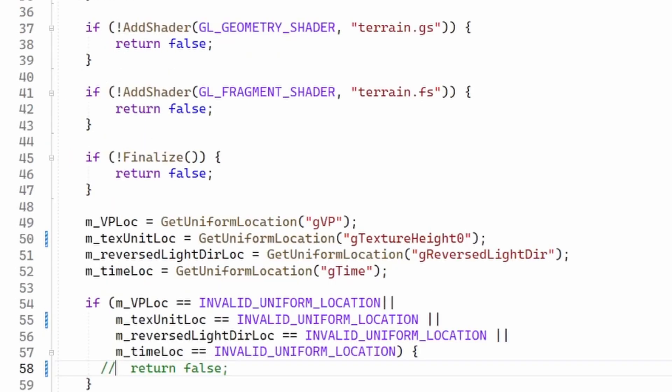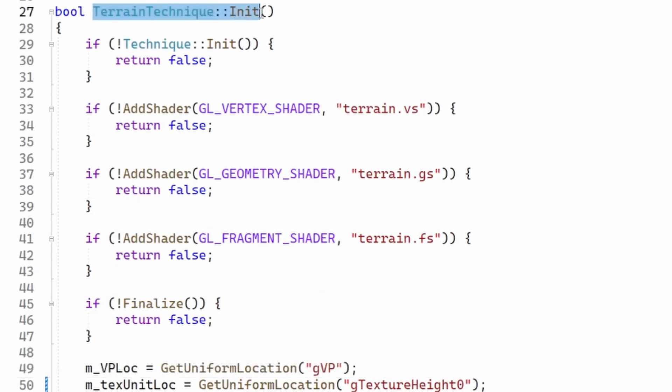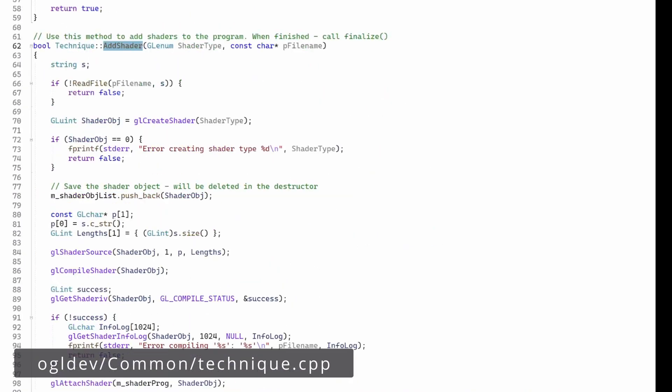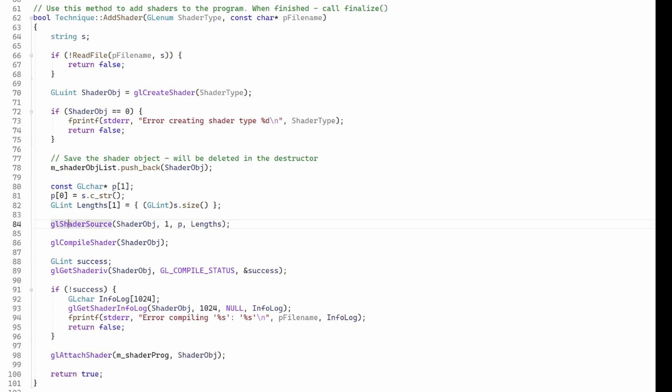Before we can start using the GS, we have to compile and attach it to the shader program as any other shader. Therefore, during the initialization of the technique, I've added a call to AddShader, which takes the special OpenGL enum of the GS along with the file name of the GS. This is the same old function that I've been using for the vertex and fragment shaders. It creates the shader object, loads the shader source into it, compiles the shader, and attaches it to the shader program. No problem so far.